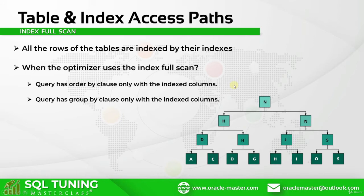So instead of reading the whole table and trying to group the mixed values, it will be easier to group the ordered values — so it will perform an index full scan and group them easily. The last condition where the optimizer chooses to perform an index full scan is if the query requires a sort merge join. In sort merge joins, the optimizer will consider the index full scan because using an already sorted record will ease its job.